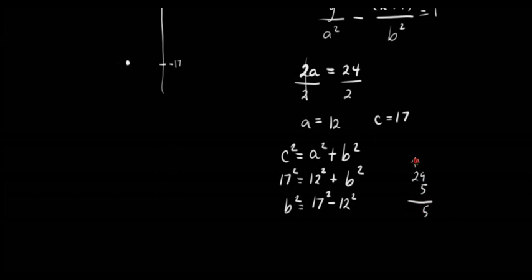5 times 29... 5 times 9 is 45, 5 times 2 is 10, plus 4 is 145. Therefore, b² = 145.